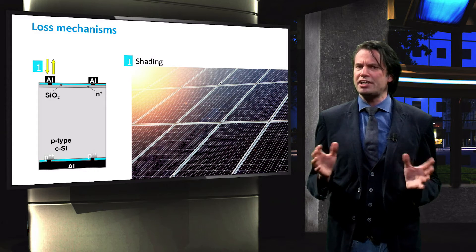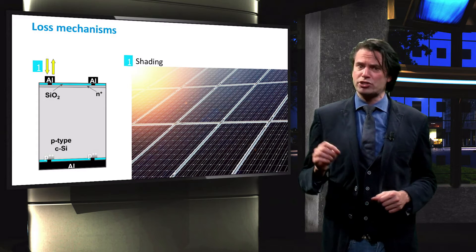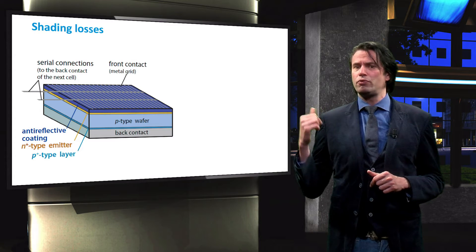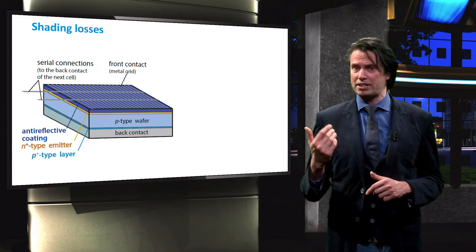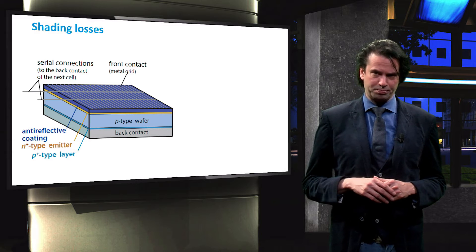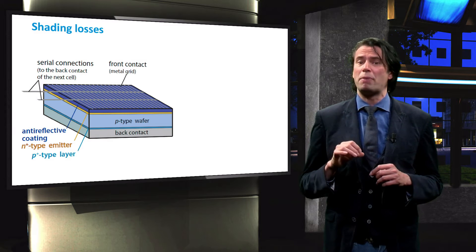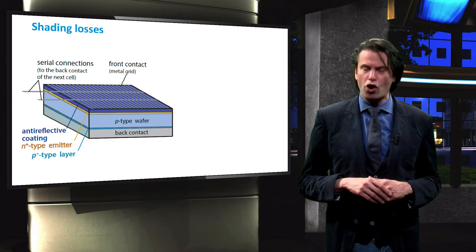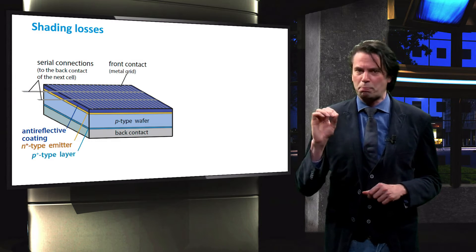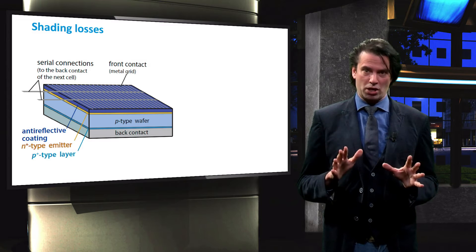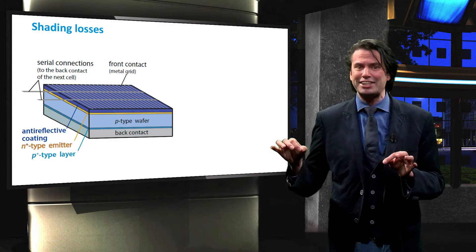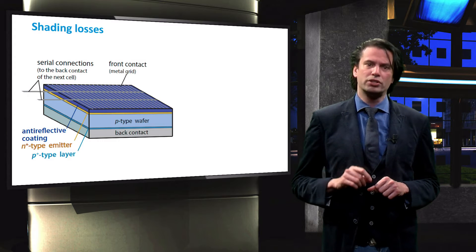To minimize the shading effect, the metal grid requires some clever designing. The solar cell we see here has a classic metal grid pattern on top. We see two conduction paths for the electrons in the middle of the front surface of the solar cell. These paths are called busbars. The small stripes going from the busbar to the edges of the solar cell are called fingers.